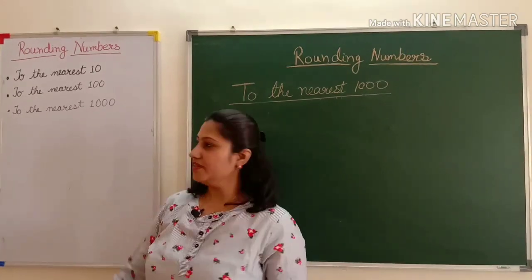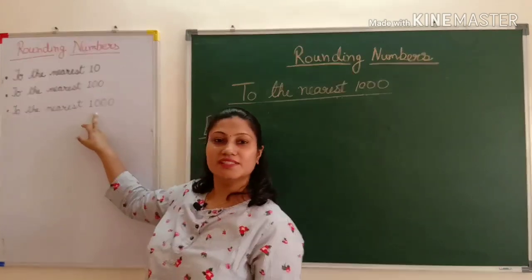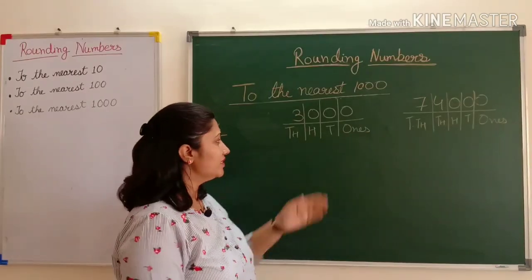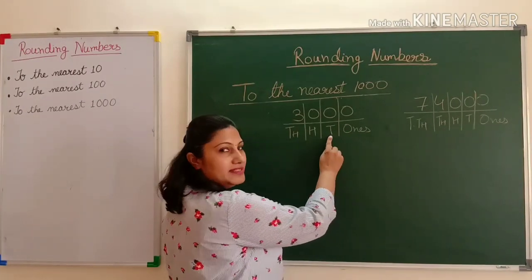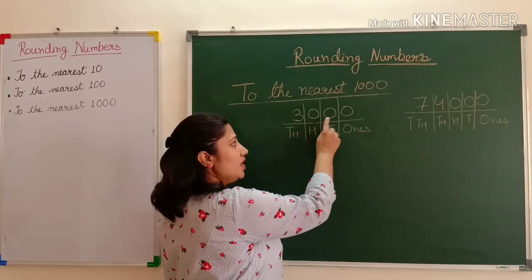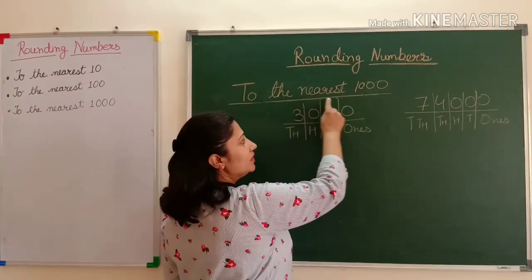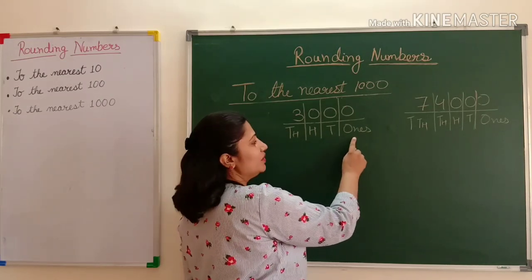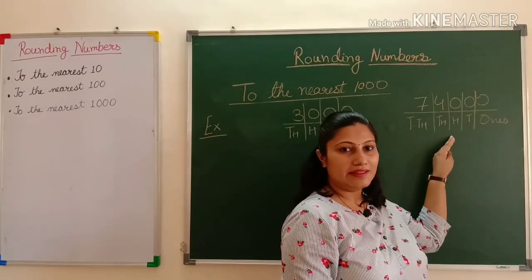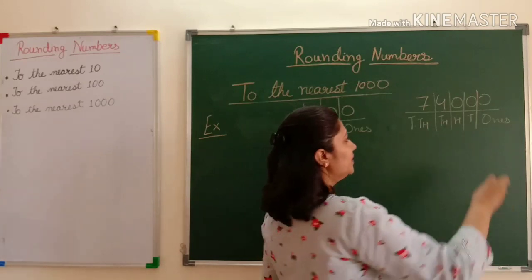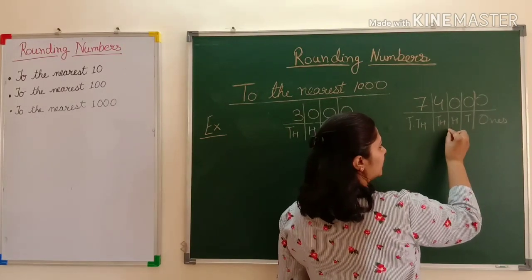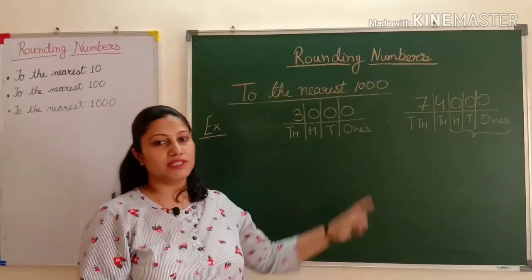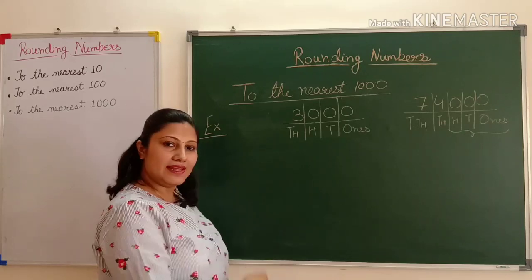Let's do our last topic: rounding numbers to the nearest thousand. For example, the number 3000 — at its ones, tens, and hundreds places, all are zero. When we round off a number to the nearest thousand, it must have three zeros at its hundreds, tens, and ones places. Here is a five-digit example where ones, tens, and hundreds places are all zero — this is already rounded to the nearest thousand. Let's see how to do this.